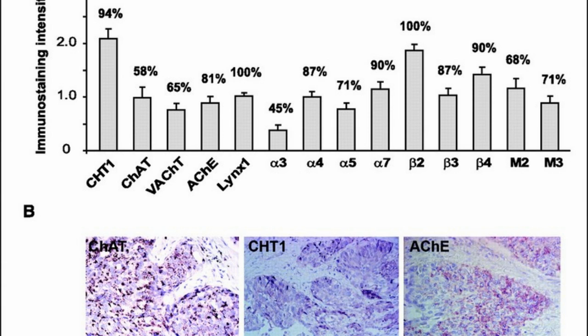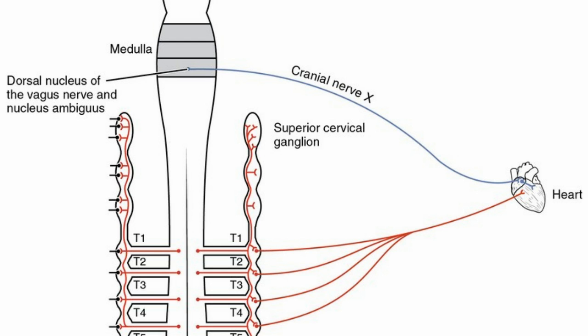A nervous system is built up of nerve cells, nerves, ganglia, and many other constituents. Taking in certain messages from inside or outside the body is done by receptors, a sensitive end which excites nerve cells to carry the message and function accordingly.